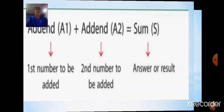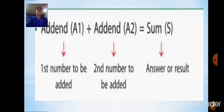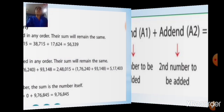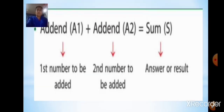Now let us take the first basic operation, that is addition. In addition, the two numbers which are added are called addends, and the answer or result we get is called the sum.